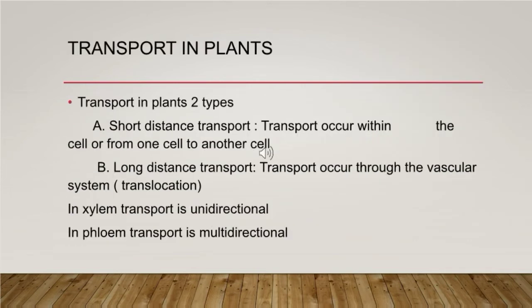Transport in plants is of two types. Short distance transport occurs within the cell or from one cell to another. Long distance transport occurs through the vascular system.